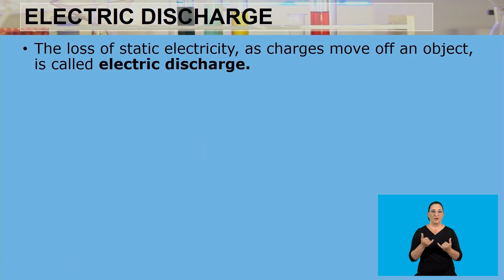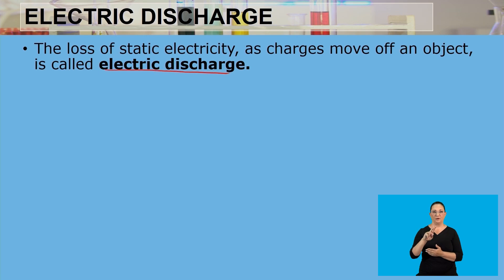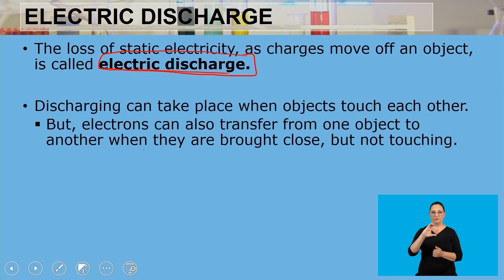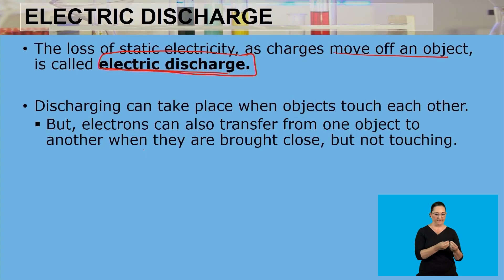Furthermore, the loss of static electricity — as charge moves off an object — is called electric discharge. Should the object lose its charges, that loss of charge is referred to as electric discharge. Discharging can take place when objects touch each other, when one substance transfers its electrons to the other, meaning the charges move from one object to the other.